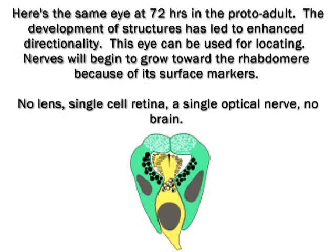Here's the same eye at 72 hours in the proto-adult. The development of structures has led to enhanced directionality — this eye can be used for locating. Nerves will begin to grow toward the rhabdomere because of its surface markers. No lens, single cell retina, a single optic nerve, no brain.